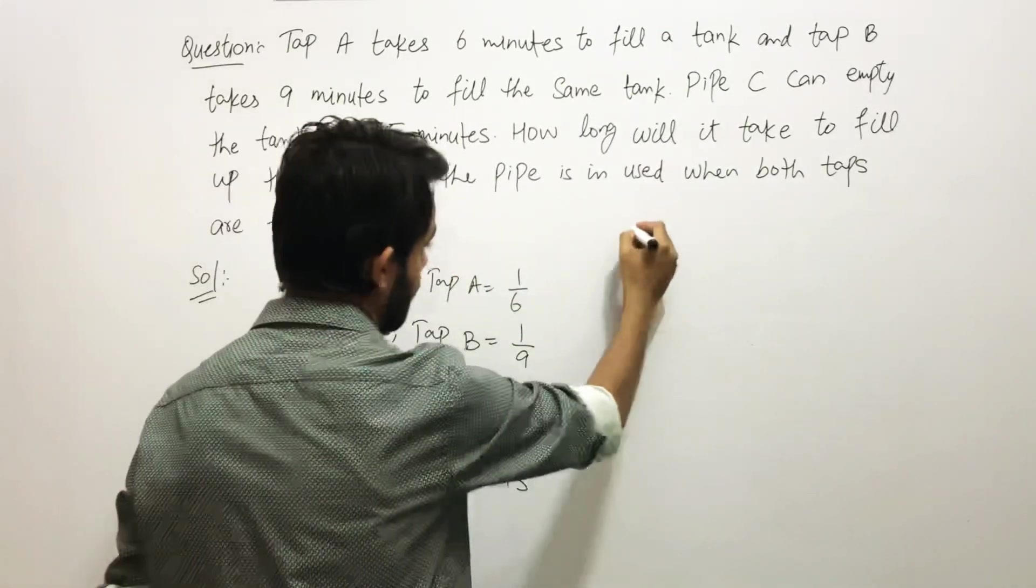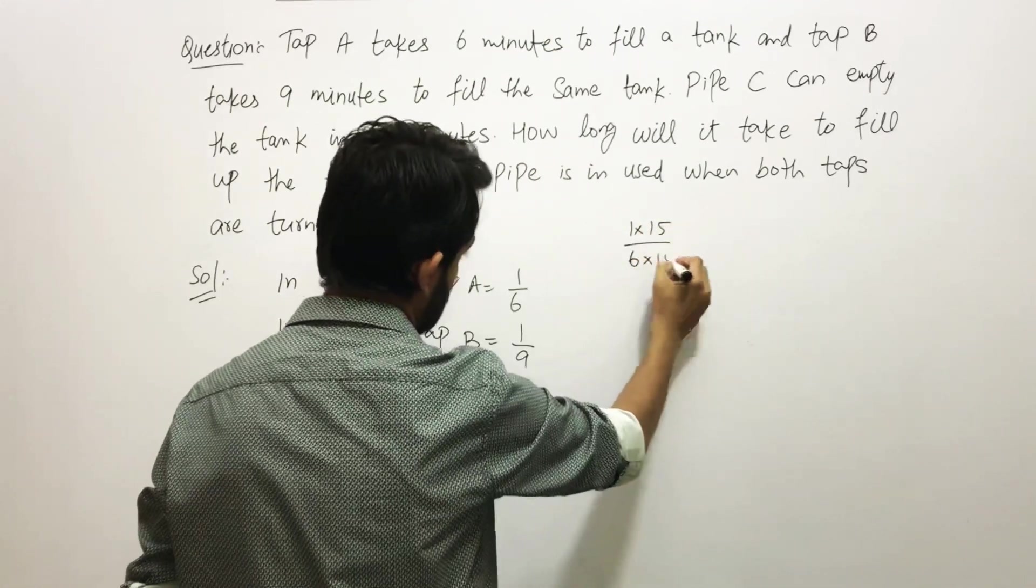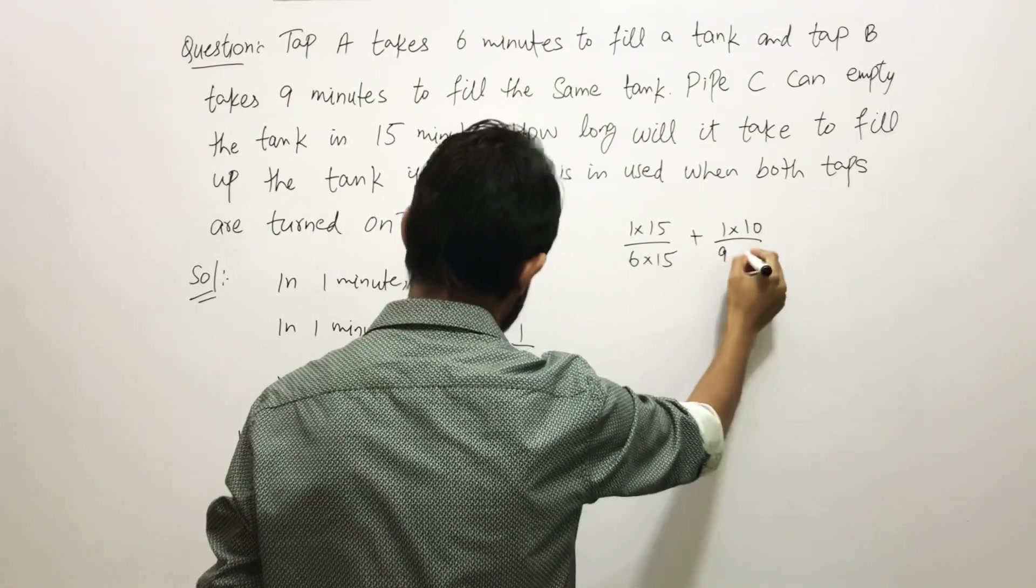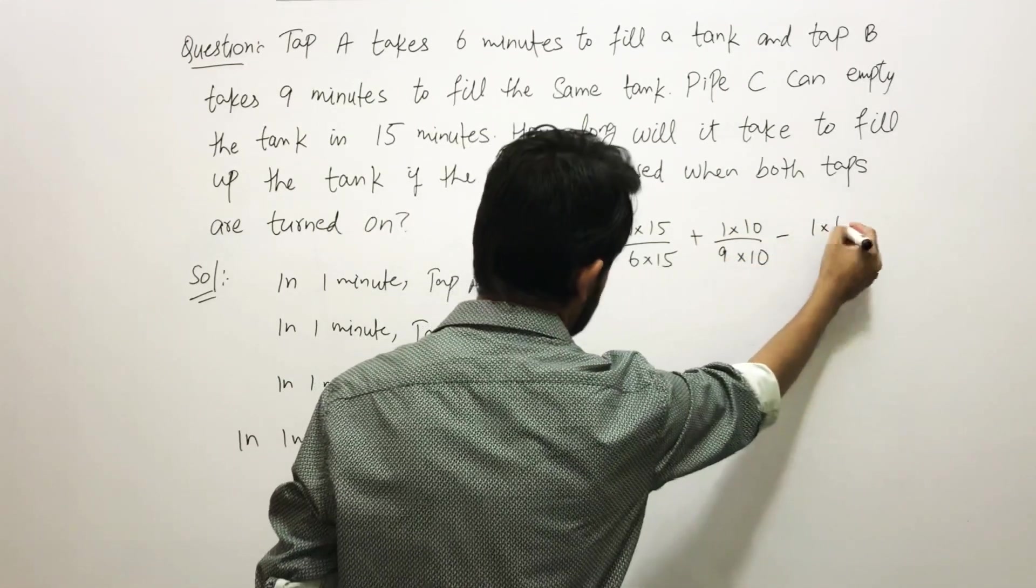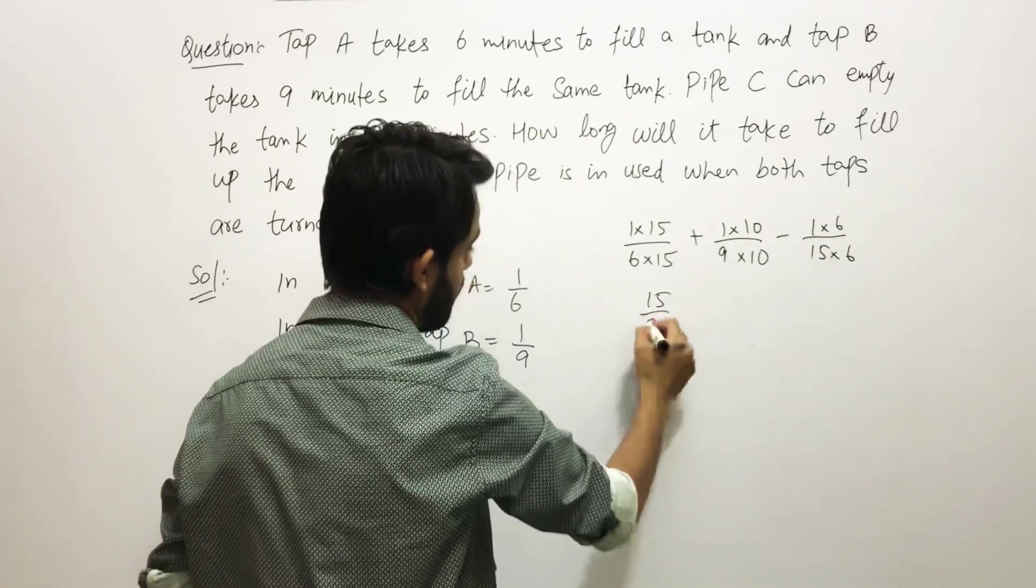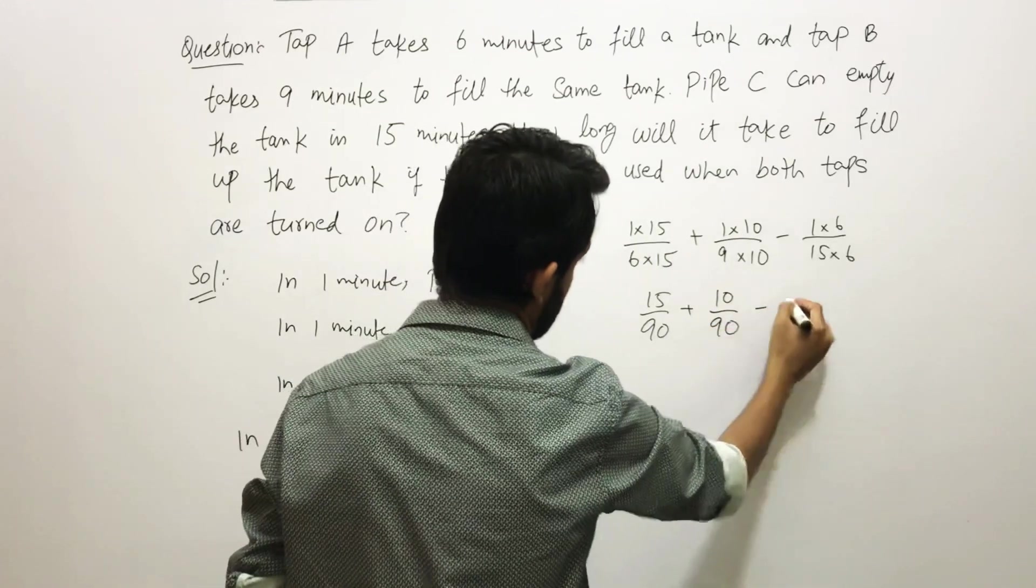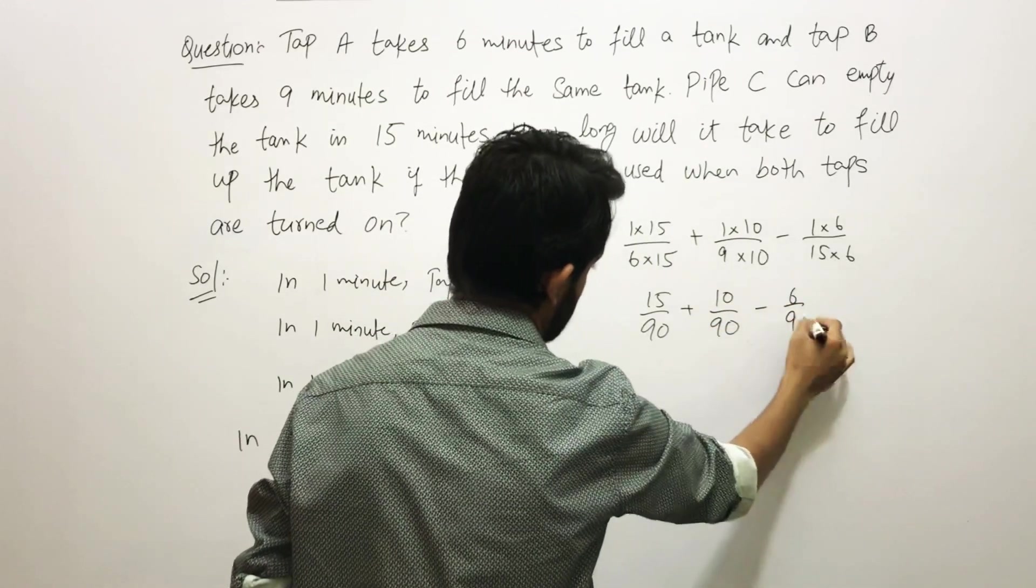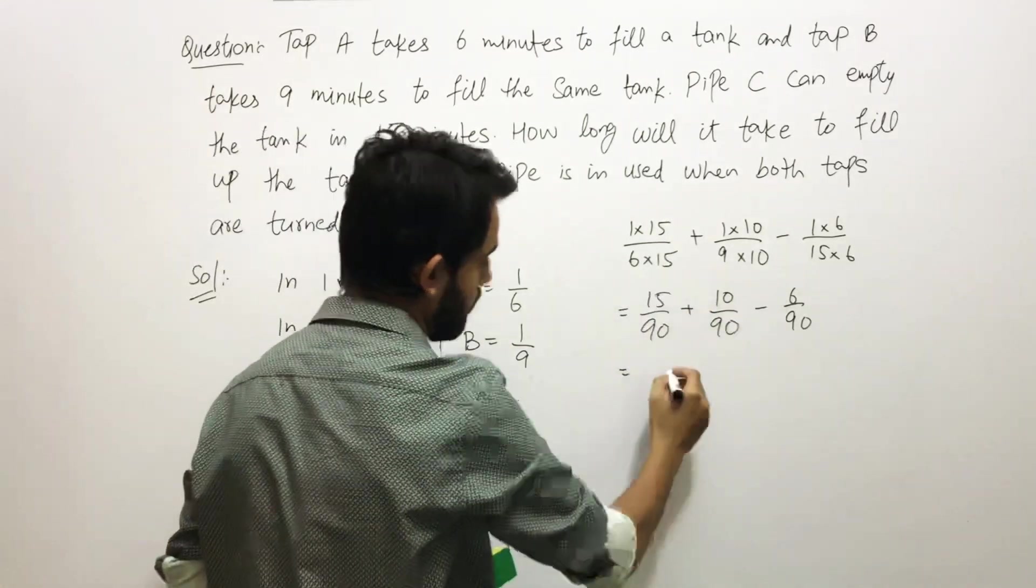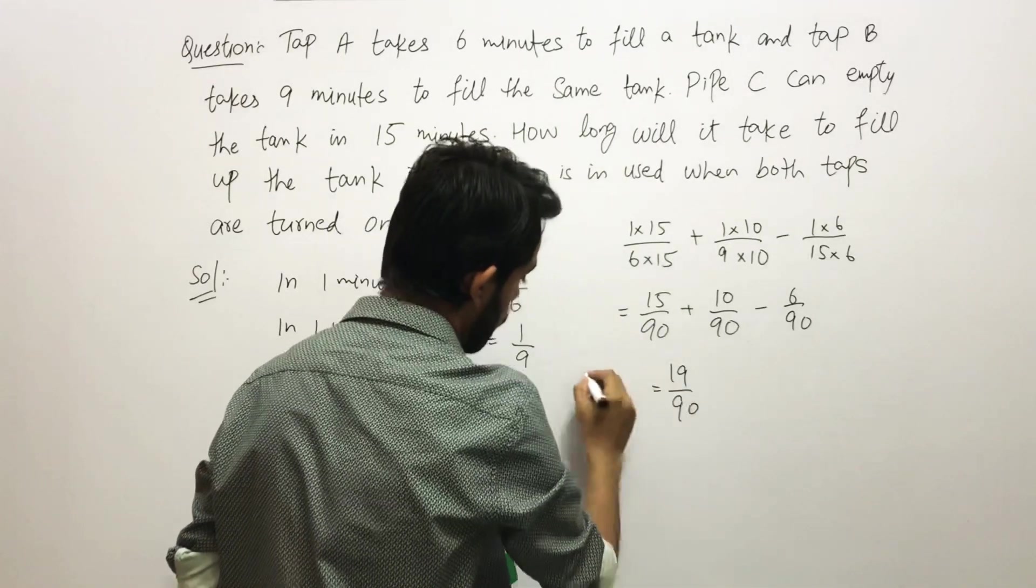1 multiply by 15, 6 multiply by 15, plus 1 multiply by 10, and 9 multiply by 10, minus 1 multiply by 6, and 15 multiply by 6. So 15/90 plus 10/90 minus 6/90. 15 plus 10 minus 6 will be 19/90.